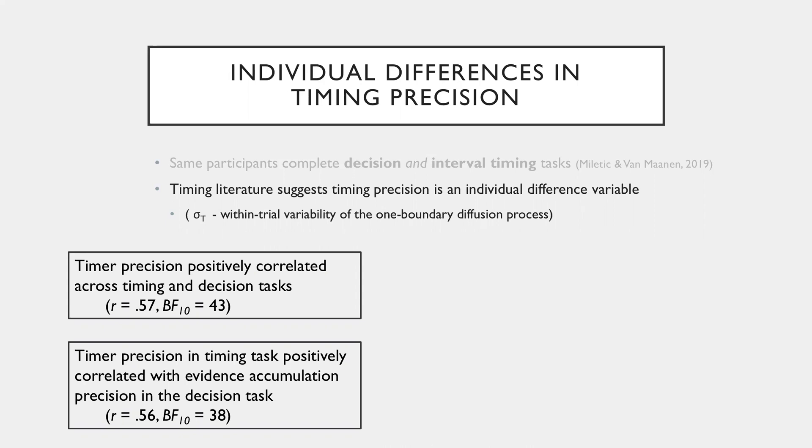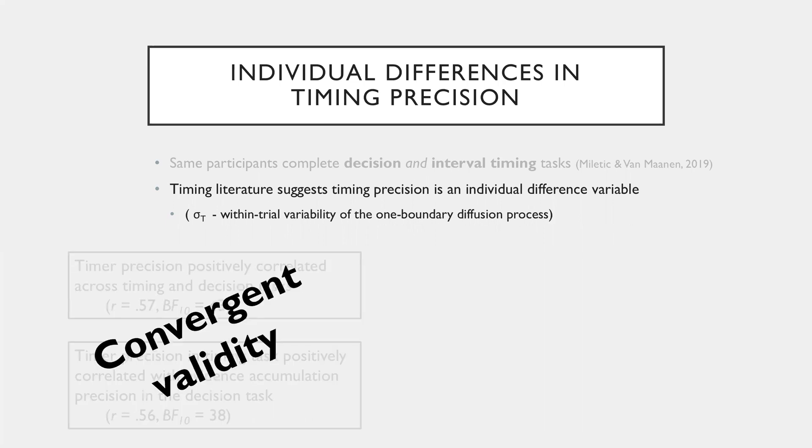We also find that the timing precision in the timing task is positively correlated with the evidence accumulation precision in the decision task, again with a quite strong correlation. So we take these together as some indication of converging validity for those features of the TRDM.